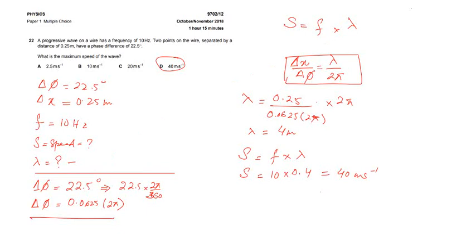the phase difference, which is 0.0625 times 2 pi. And the wavelength will be, path difference is 0.25, phase difference is 0.0625 times 2 pi and times 2 pi.